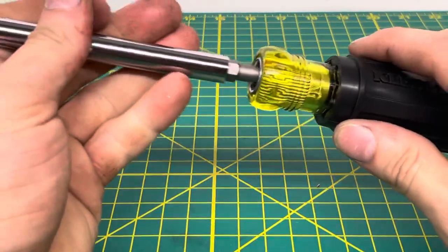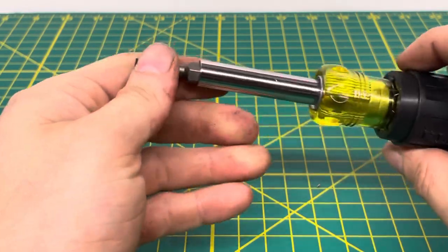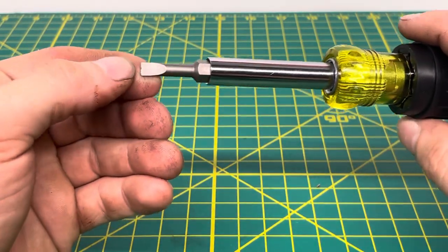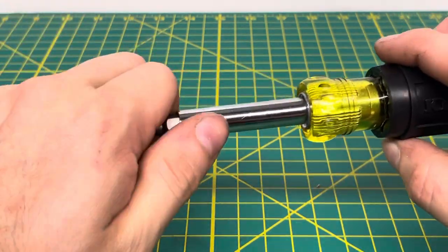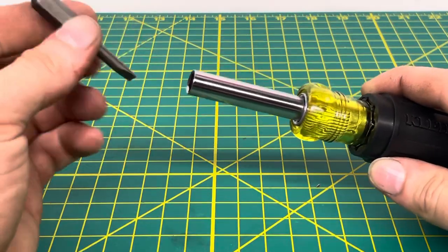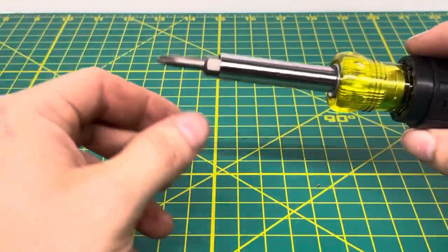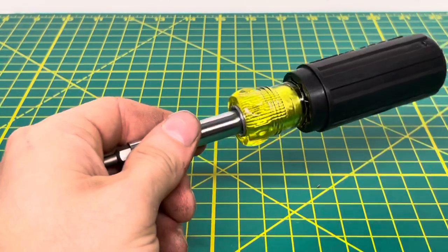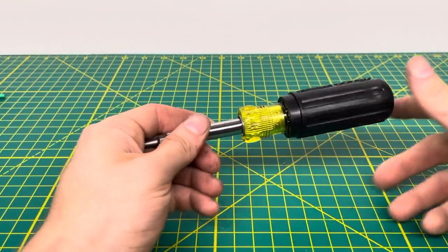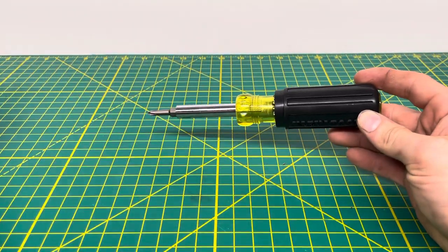You just swap sides to get to your other set of drivers. You have, I believe this is your 3/16 slotted, and then you flip this guy around and you have your number one Phillips right there, which is nice.